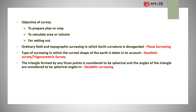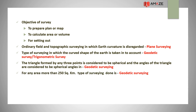In geodetic survey, the triangle formed by any three points is considered to be a spherical triangle, and the angles are considered to be spherical angles. For any area more than 250 km², the type of surveying done is geodetic survey.